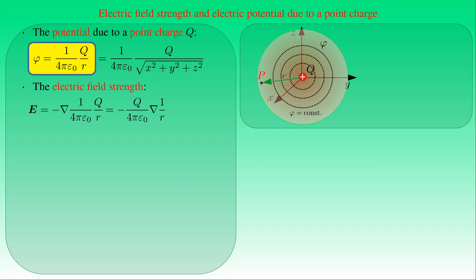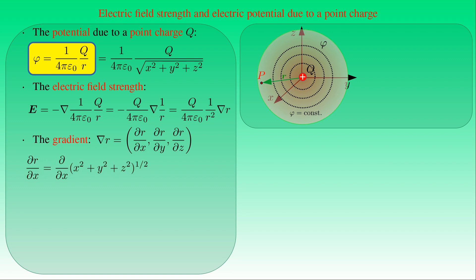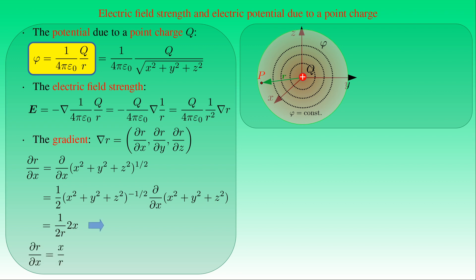The x-component of ∇R is ∂R/∂x = (1/2)(x²+y²+z²)^(−1/2) × 2x = x/R; similarly y/R and z/R for the y and z components. Therefore ∇R = R/R = eR — the unit vector pointing from Q to P. Substituting into the formula, E = (1/4πε₀) × Q/R² × eR, i.e., E = (1/4πε₀) × Q·R/R³.